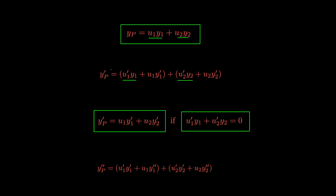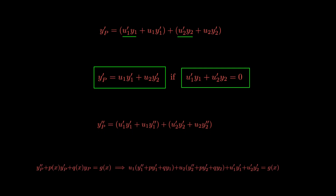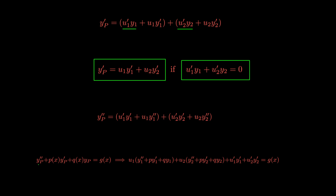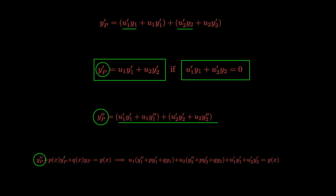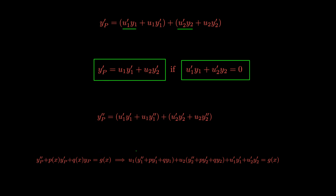Now that we've computed the first and second derivatives, we can plug them straight back into our differential equation. Plugging into our differential equation gives us this expression, which will provide the conditions we need to find u1 and u2. One simply replaces y double prime, y prime, and yp — which is u1*y1 plus u2*y2 — by their actual expressions, and then simplifies. The resulting expression simplifies to this, and you can check that yourself.